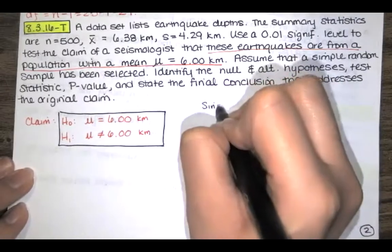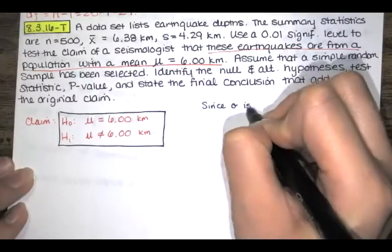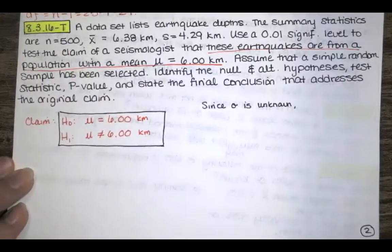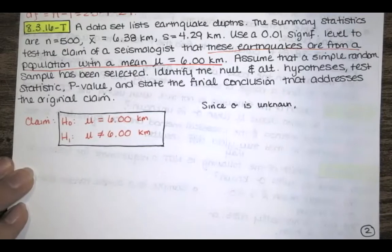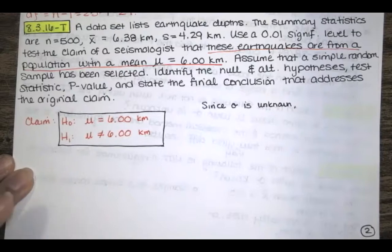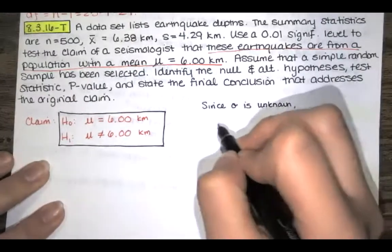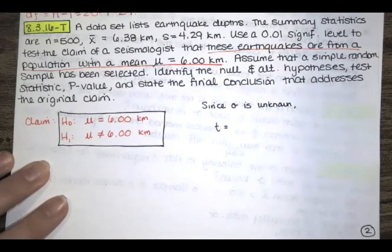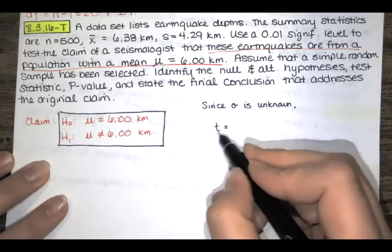Since our population standard deviation is unknown and we have a sample size greater than 30, the sampling distribution of the sample means has the symmetry we would expect. It's going to look a little like a normal distribution but with a different standard deviation — it's going to be a Student T distribution with that same basic shape but a different standard deviation.